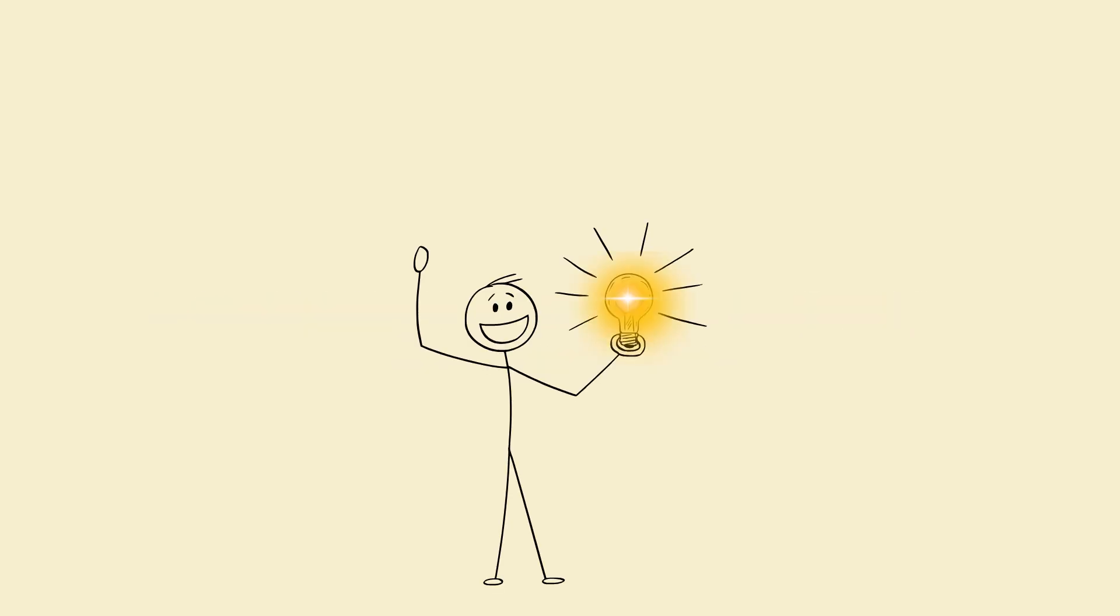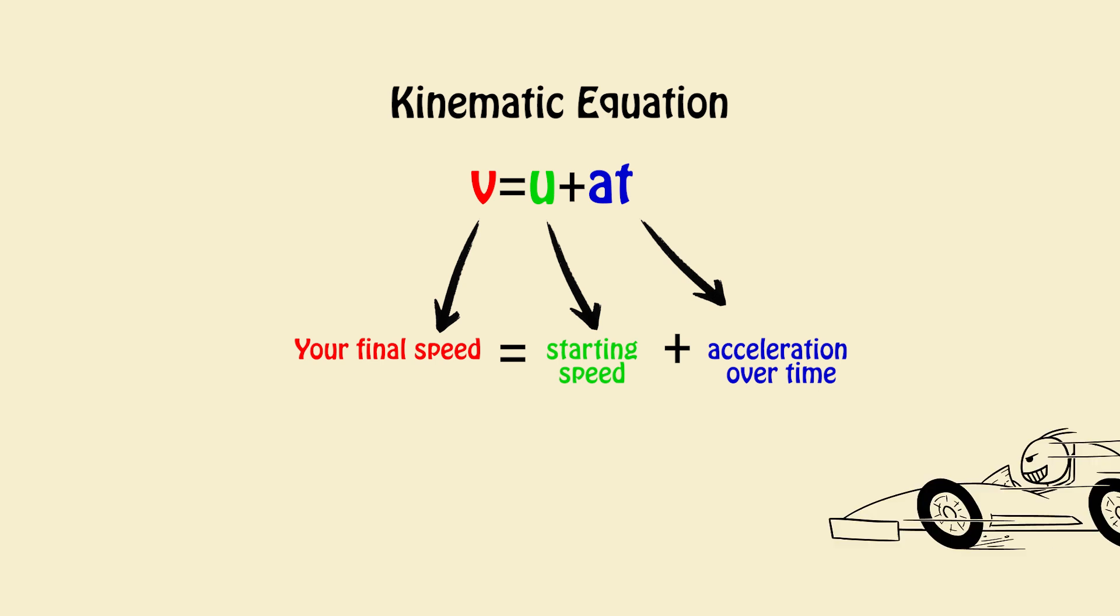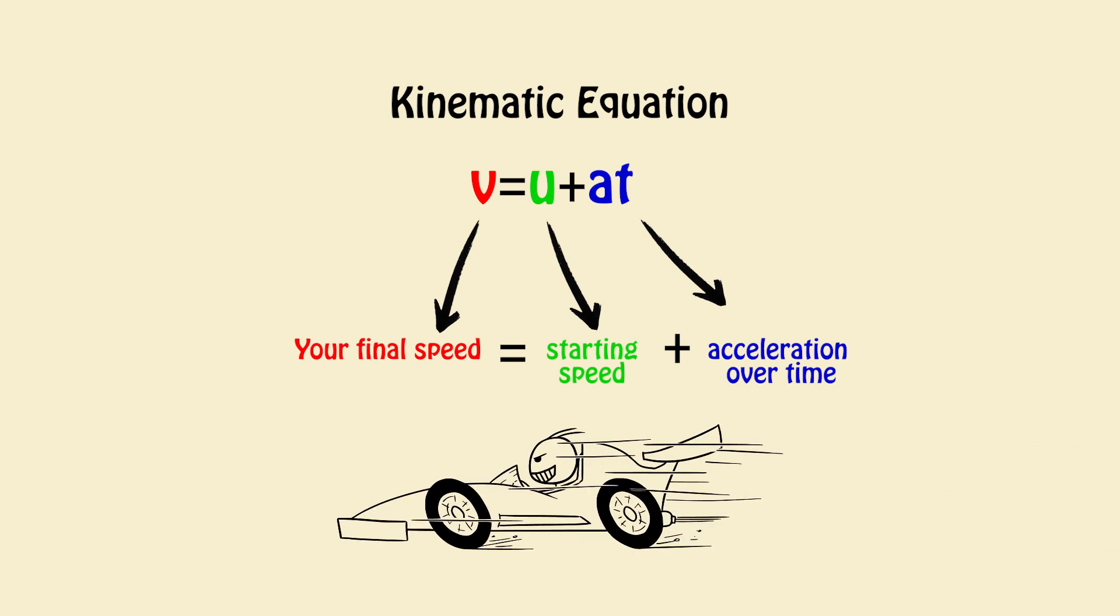Five-second formula breakdown. Add this in cutaways. Make each formula feel like a power-up, not punishment. Example. Kinematic equation. V equals U plus AT. Translation. Your final speed equals starting speed plus acceleration over time. It's literally how fast you get when you keep speeding up. That's it.